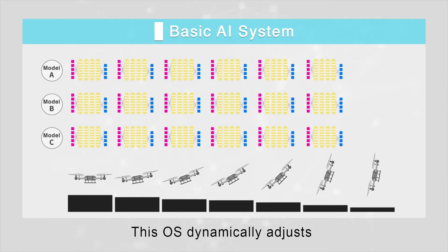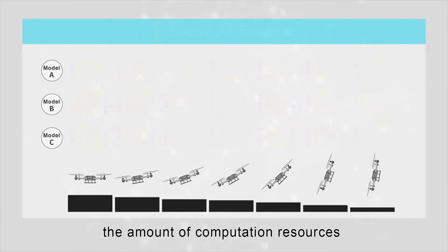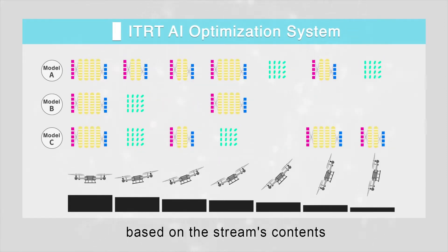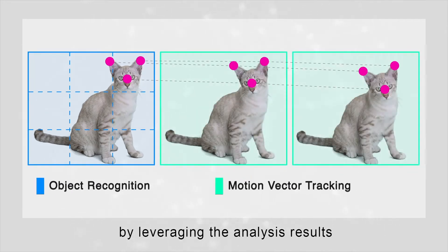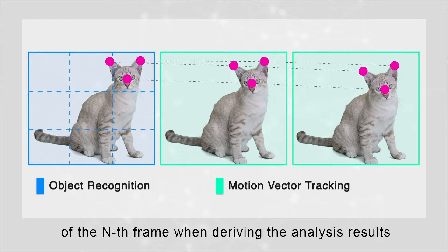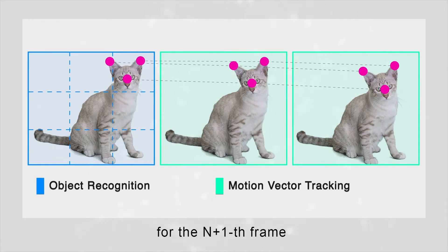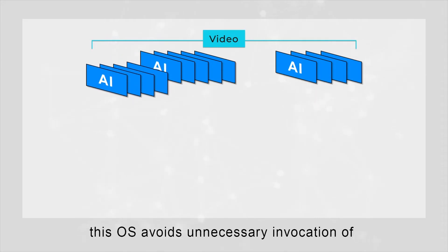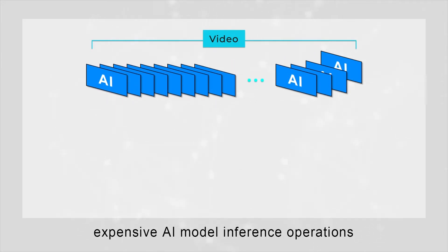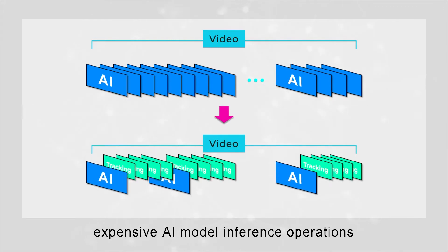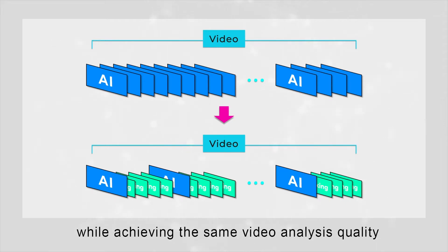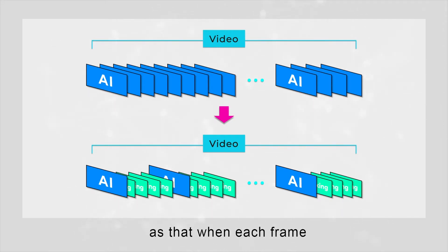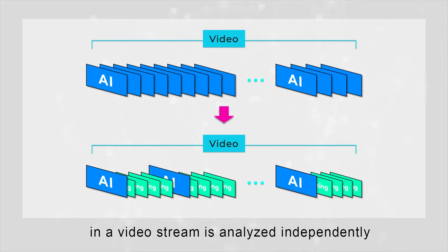This OS dynamically adjusts the amount of computation resources required to analyze a video stream based on the stream's contents. Specifically, it exploits the coherency or similarity between consecutive frames in a video stream by leveraging the analysis results of the nth frame when deriving the analysis results for the n+1th frame. With this approach, this OS avoids unnecessary invocation of expensive AI model inference operations whenever possible and significantly cuts down the required computation requirement while achieving the same video analysis quality as when each frame is analyzed independently.